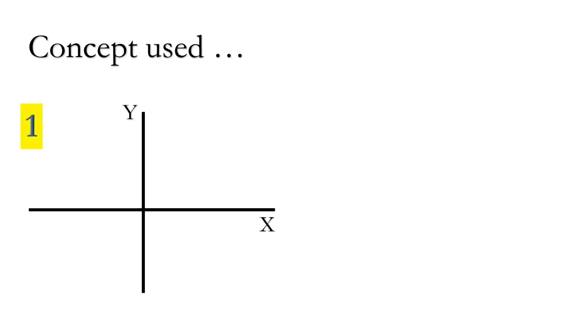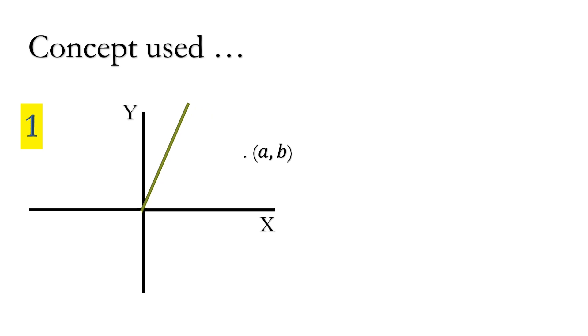We will use two concepts in proving this. First, if a rod is kept with one of its ends at the origin and we rotate it about the origin through an angle theta, then the new coordinates of its other end become (a·cos θ − b·sin θ, a·sin θ + b·cos θ).